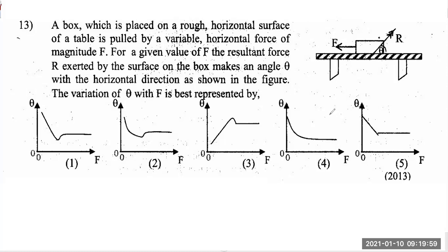This is a question from 2013 about friction. They are applying a horizontal force F, and for a given value of F, the resultant force R exerted by the surface on the box makes an angle theta with the horizontal direction as shown in the figure. The variation of theta with F is best represented by which graph?